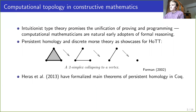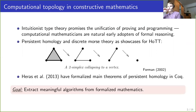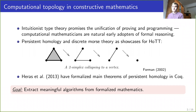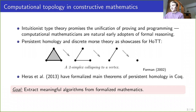There has already been some nice work by Heras et al. who have formalized some main results of persistent homology in Coq, and we want to take this a bit further. We want to formalize mathematics in a way that is close to mathematical intuition, but since we work in constructive type theory the algorithms just fall out of our formalizations — it's not really programming, we do maths, and the computational content is characterized by the maths that we do in type theory.